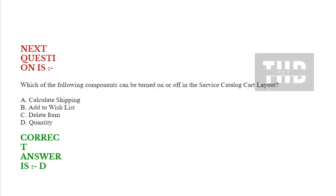Next question: Which of the following components can be turned on or off in the service catalog cart layout? Option A: calculate shipping. Option B: add to this list. Option C: delete item. Option D: quantity. Correct answer is option D.